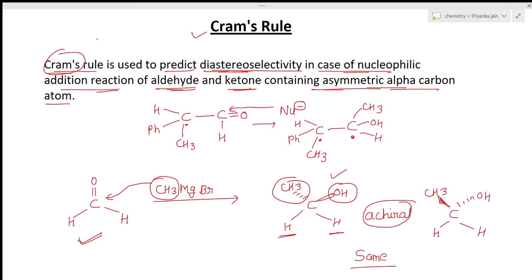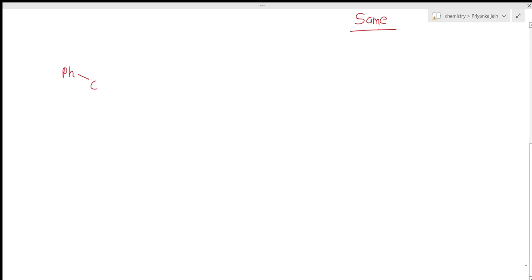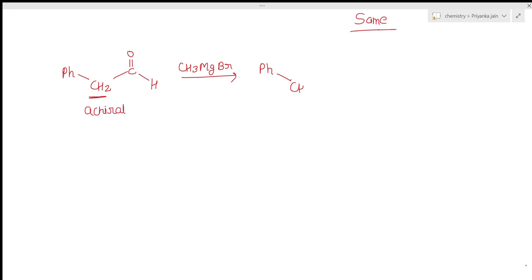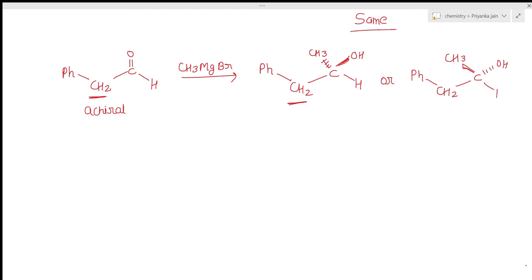Similarly, if we take PhCH2-C=O and treat it with CH3MgBr, the alpha carbon is again achiral. The product can have CH3 or OH above or below the plane. In this case, the two possible products are enantiomers, formed in equal 50:50 amounts, because there was no existing chiral center adjacent to the carbonyl carbon.